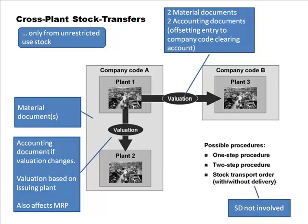With two different company codes involved, each company code has to track the material properly. You would require two material documents. But since material documents are at the client level, if you create one material document it can potentially be seen on both ends. A material document is related to plant, not to company code, so it's possible it could be done with just one material document depending on authorization.